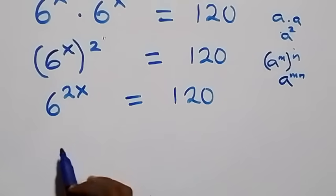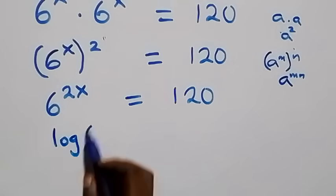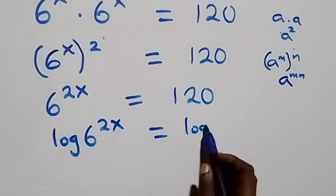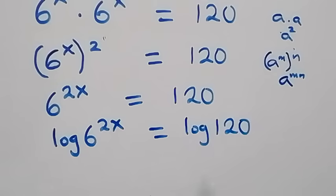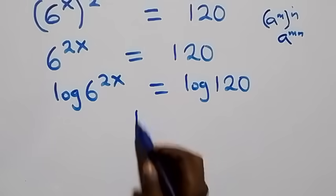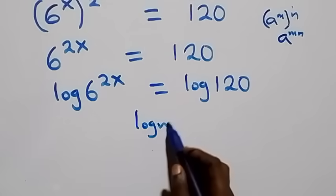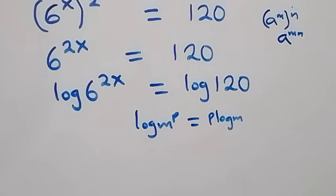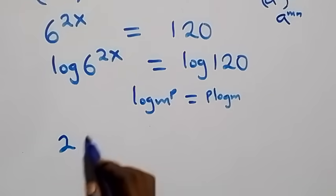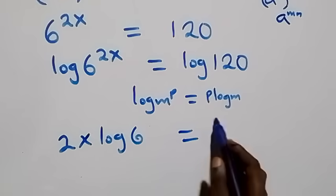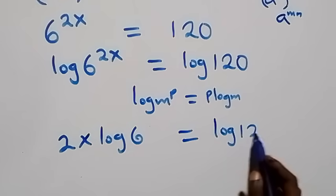The next step is to take the log on both sides. That is, we have log of 6 raised to power 2x equals log 120. We then apply the power log rule: log of m raised to power p is the same as p times log m. So what we have becomes 2x times log 6 equals log 120.